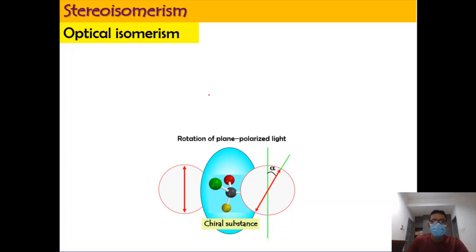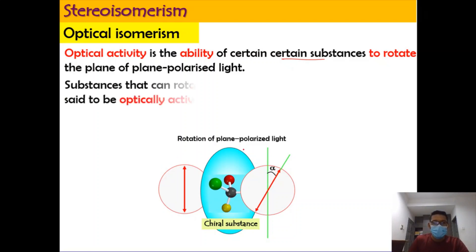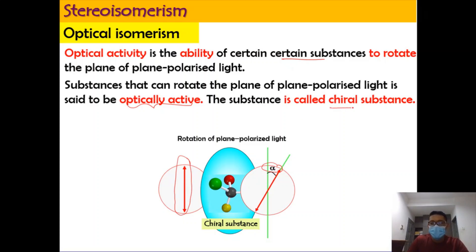For optical isomerism, it basically refers to optical activity, which is the ability of a certain substance to rotate the plane polarized light. So the substance that can rotate the plane polarized light — giving an angle — is said to be an optically active compound. The substance that can rotate the plane polarized light is known as a chiral substance.